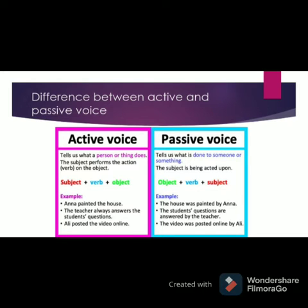On your screen there are some differences between the active and the passive voice. In the active voice, it tells us what a person or thing does — the subject performs the action on the object. In the passive voice, it tells us what is done to someone or something — the subject is being acted upon. The formula for active voice is: subject + verb + object. In the passive voice, the object of the active becomes the subject.